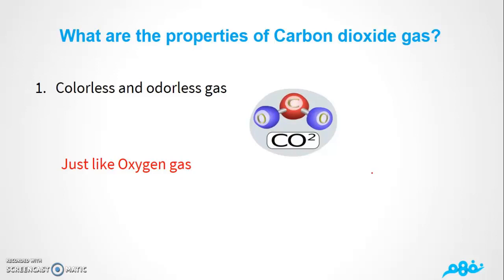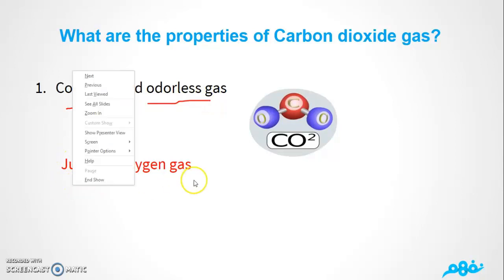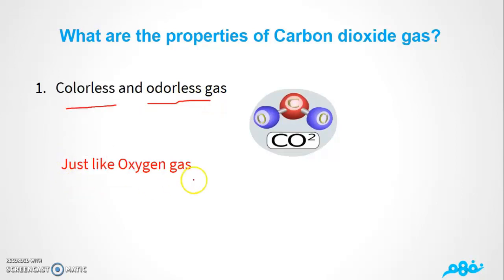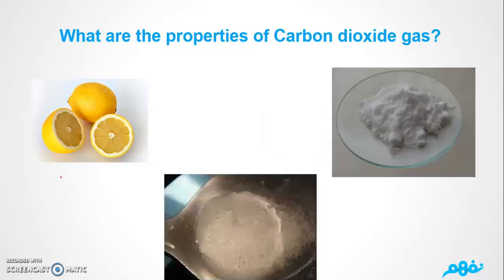Now I'm going to talk about the properties of carbon dioxide gas. First of all, you should know that it is colorless and odorless — it has no color and no smell — just like oxygen gas, which we discussed in the previous lesson.